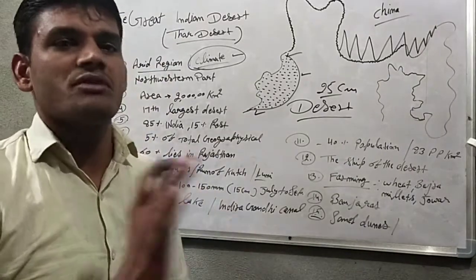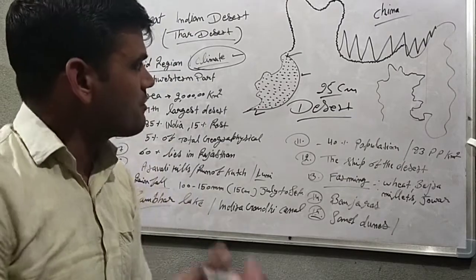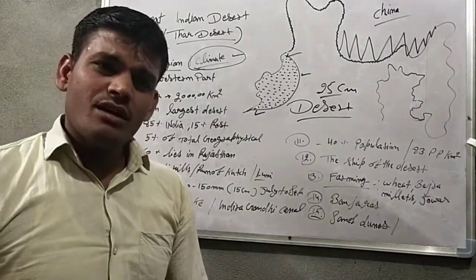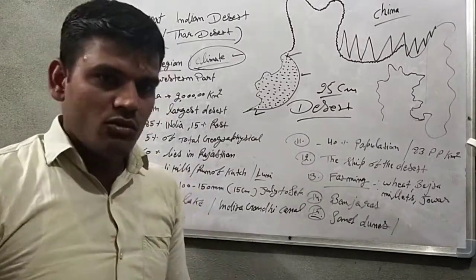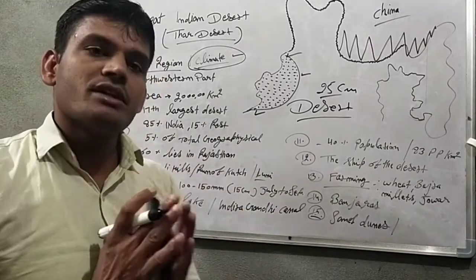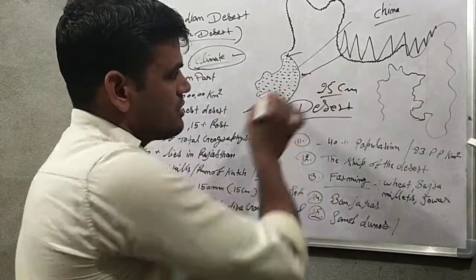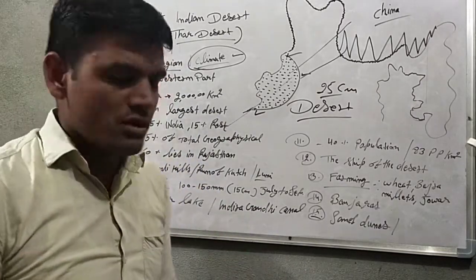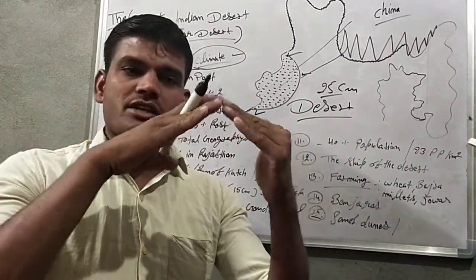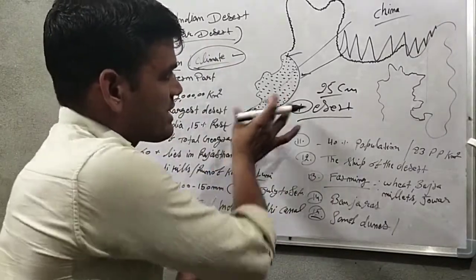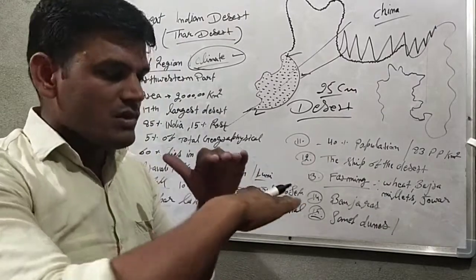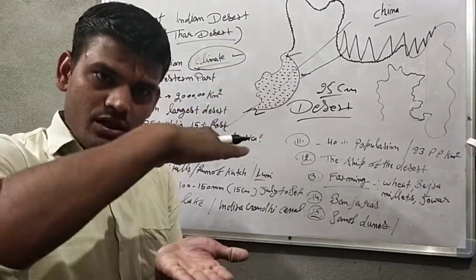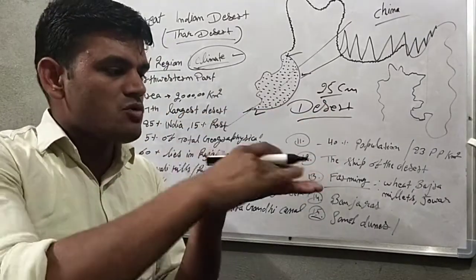Different scholars have different views about the Indian desert. One important view is about plate movements. The Indian desert was formed through tectonic plate movement. There are views related to oceanic processes and changes in water levels that contributed to the desert's formation.